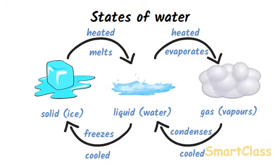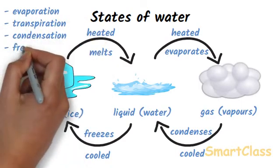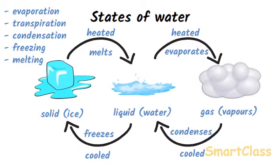During water cycle in nature water goes through changes of state. Actually water cycle in nature involves many physical processes such as evaporation, transpiration, condensation, freezing, and melting etc. Before we understand the water cycle in nature we will first understand the various processes involved in it.